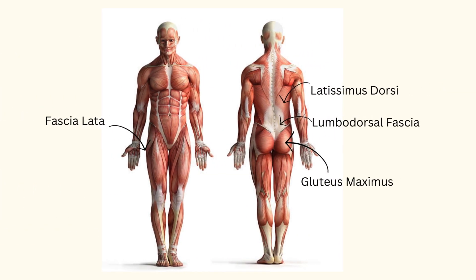Looking at an illustration of superficial muscles, you may be wondering whether we should be more concerned about muscles rather than fascia. Well, it's important to consider that muscles transmit 40 percent of their contraction forces not through their tendons, but via fascial connections to neighboring muscles. Some examples include your gluteus maximus, which communicates with your lower leg muscles through the fascia lata, and the latissimus dorsi, which engages with the contralateral gluteus maximus via the lumbodorsal fascia.